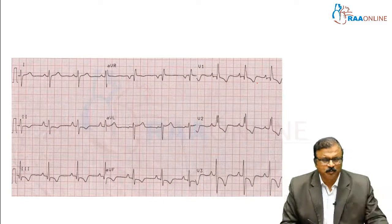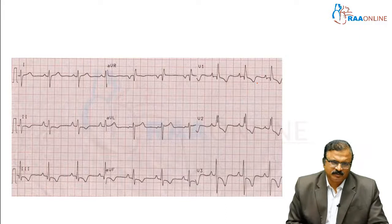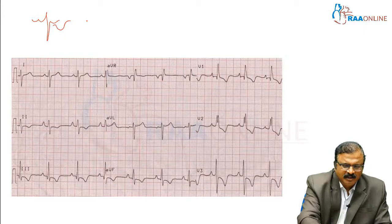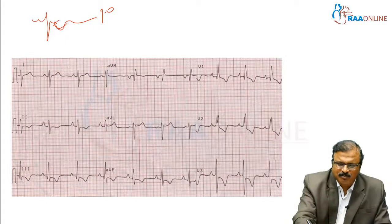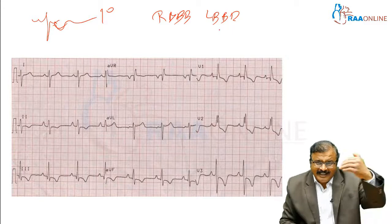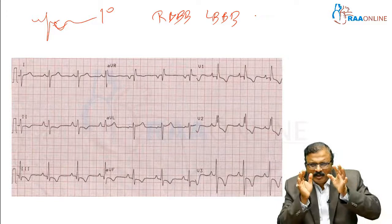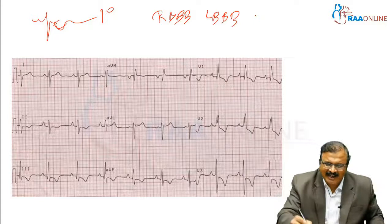We should know the difference between primary T change and secondary T change. Primary T change is what you get with ischemia or coronary artery disease — T inversion is seen and that is the primary T change. In the presence of bundle branch block, either RBBB or LBBB, the T wave is opposite to the QRS — if QRS is positive, T wave will be negative. That is called a secondary T change.